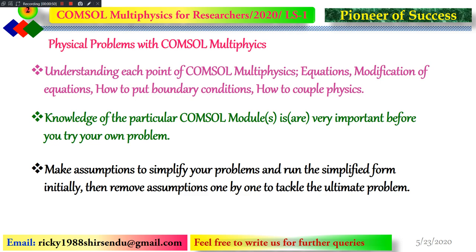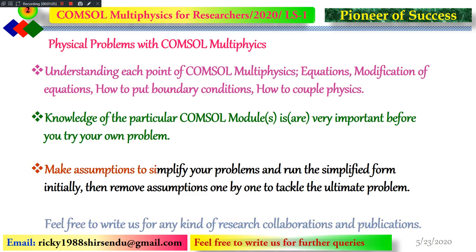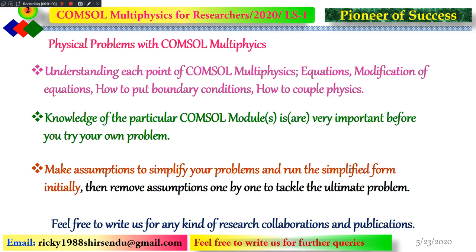You are targeting a particular problem, and you have to know what physics will govern that problem. From that knowledge, you have to identify what COMSOL modules you will be using and segregate them. Then, make assumptions to simplify your problem and run the simplified form initially. Then remove assumptions one by one to tackle the ultimate problem. We have to assume many things so that our equations become very simple, and we can model it and put appropriate boundary conditions to run the simulation.